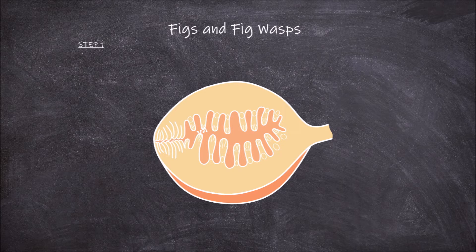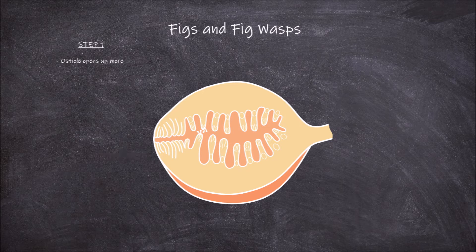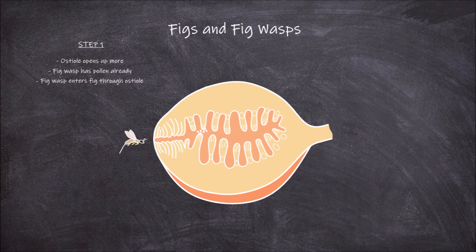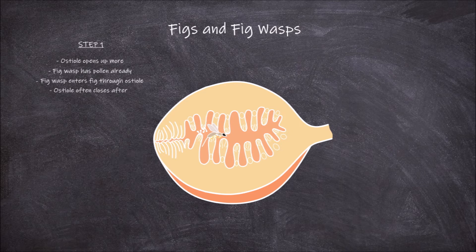The first step in this mutualism for the synconium is for the osteol to open up a bit more at the time it is more receptive to pollen. The first step for the fig wasps is for a female fig wasp, who already has pollen from another fig plant on it, to enter the fig through the osteol. The osteol is tiny and aids in making the fig more pollinator specific. It often closes back up after the receptive period.